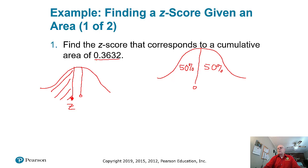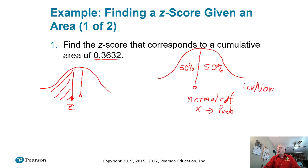How do we get it? Before we used normal CDF to go from an x-value to a probability. So how do we do the opposite? We're going to inverse that operation — take it in the opposite direction. We're going to use Inverse Normal.